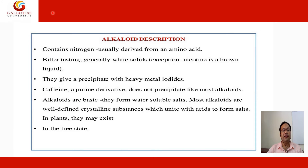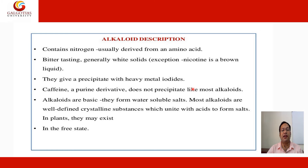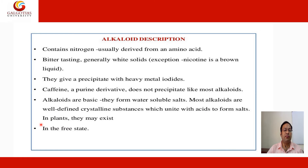Alkaloidal description: Alkaloids basically contain nitrogen, usually derived from amino acids. Most bases which do not contain oxygen are liquid at room temperature, like nicotine, which is a brown liquid; most others are generally white solids. They give a precipitate with heavy metal iodides. Caffeine, a purine derivative, does not precipitate like most alkaloids. Alkaloids are basic and form water-soluble salts. Most alkaloids are well-defined crystalline substances which unite with acids to form salts in plants. They may also exist in the free state.